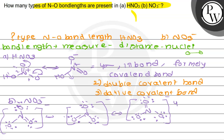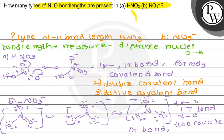How many sigma bonds are present in NO3-? 4 sigma bonds, and one pi bond is present between nitrogen and oxygen. On seeing the types of bonds: how many are there? 2 single covalent bonds and 1 double covalent bond. So 2 single covalent bonds and 1 double covalent bond.